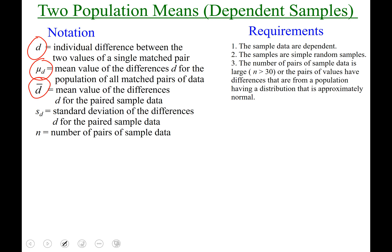So mu sub d and d bar, they both represent the mean, just like mu and x bar, except mu is for the population and d is for the sample. Hopefully that will help you.